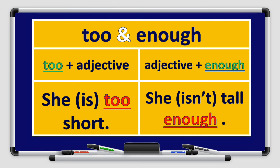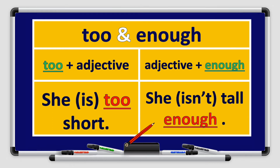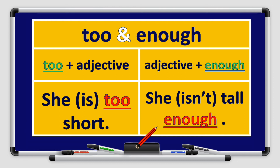Let's compare: here we have 'too' plus adjective, and here we have adjective plus 'enough.' With 'too' plus adjective: She is too short — 'too' comes before the adjective. With 'enough': the adjective comes before the word 'enough,' and we use the verb in negative. She isn't tall enough. Don't forget to use the verb in negative.